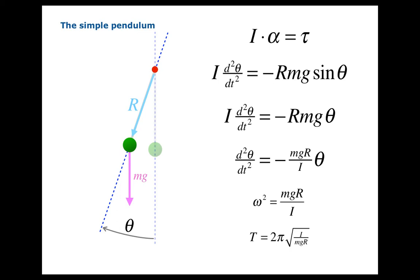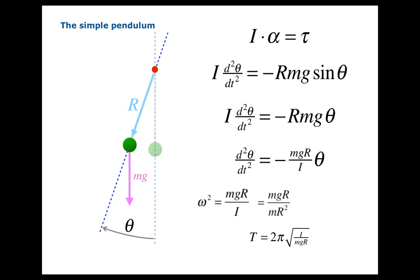The only difference is that now we know what the rotational inertia is. The rotational inertia for a point mass is just mr squared. So we can take I and replace it with mr squared and simplify the equation, and we find that omega squared equals g over r.